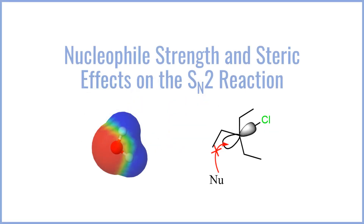Hey everyone, welcome to BCP Med. In this video we're going to be taking a look at the effects of nucleophile strength and sterics on the SN2 reaction — namely how things like anionic character and lone pair availability impact the ability to participate in SN2, and how substitution, i.e. primary, secondary, or tertiary carbons, relate to the SN2 process. Let's go ahead and get started.